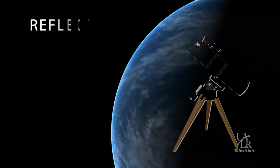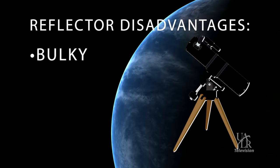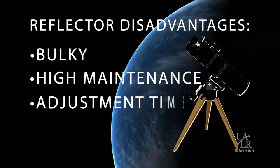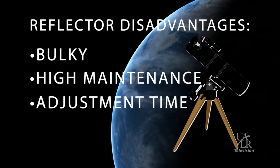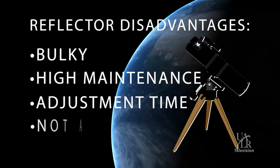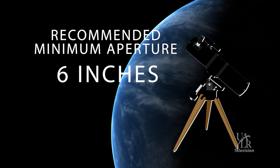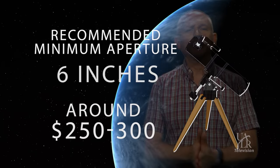The disadvantages are that reflectors tend to be larger and bulkier than a refractor. They're not always easy to transport. They can also be very high maintenance, especially with large apertures, as the mirrors will have to be realigned on occasion. Another disadvantage with a reflector is that you will have to let the mirror adjust to the outside air temperature before you can begin observing. This is a process that can take 20 minutes or more depending on the aperture of the scope. And finally, images will never be as clear and crisp as they are in a refractor. For a good Newtonian, I'd recommend an aperture of at least 6 inches. The cost for a basic 6-inch reflector will usually run you about $250 or $300.